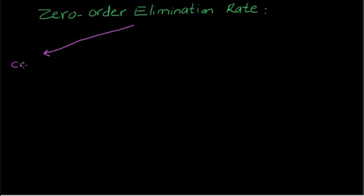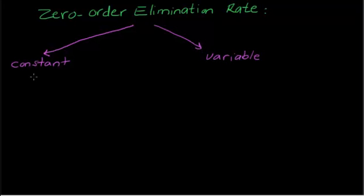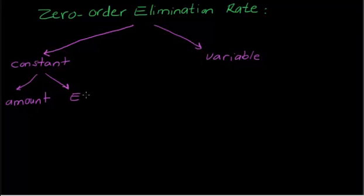The first term is 'constant' and the other is 'variable.' In case of zero order elimination, the amount of the drug being eliminated is constant, and the elimination rate is also constant.